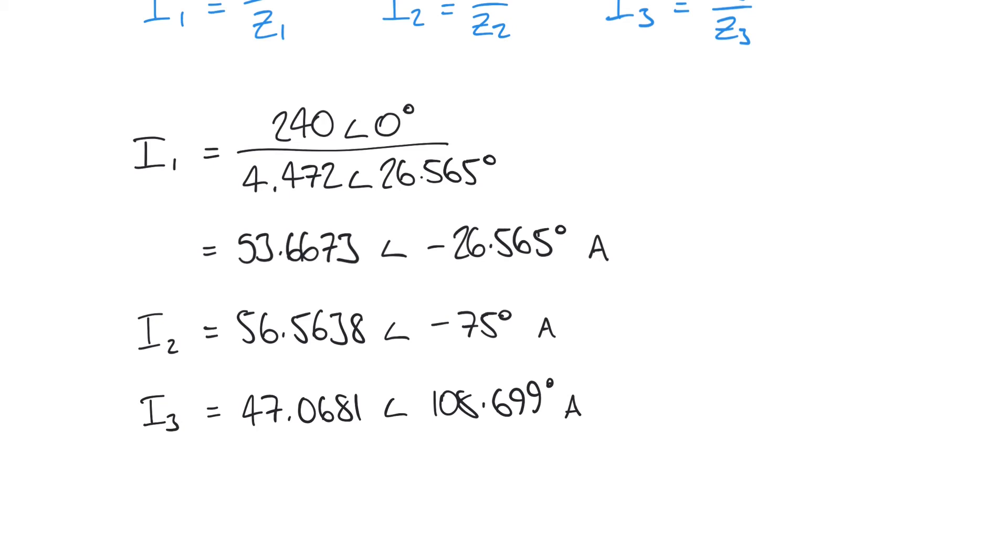Remember what we said in our previous video on the balanced star network: the line currents in a star network are equal to the phase currents. So we don't need to calculate the line currents in this case. That's not the case in a delta network, but in this case we already know them if we know the phase currents.